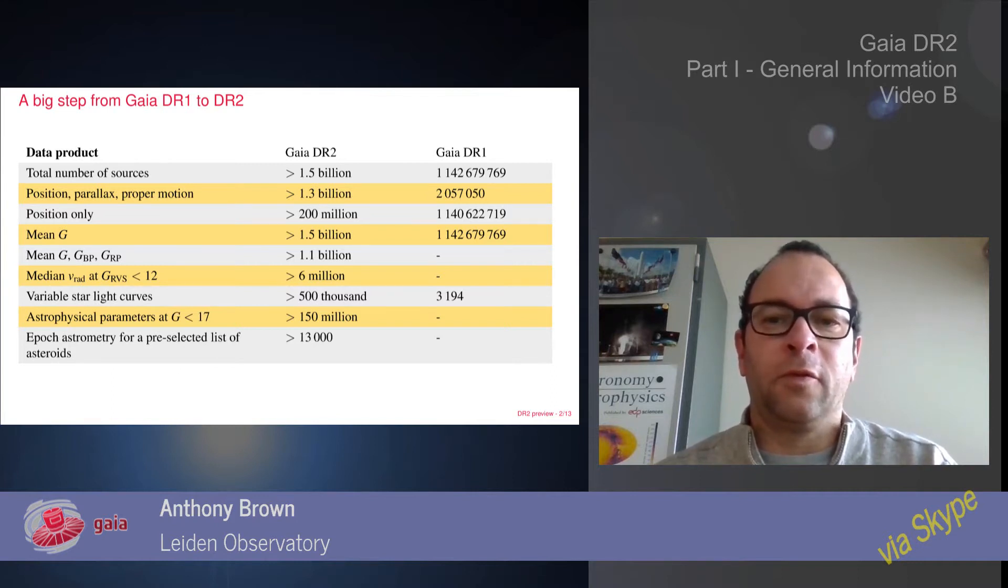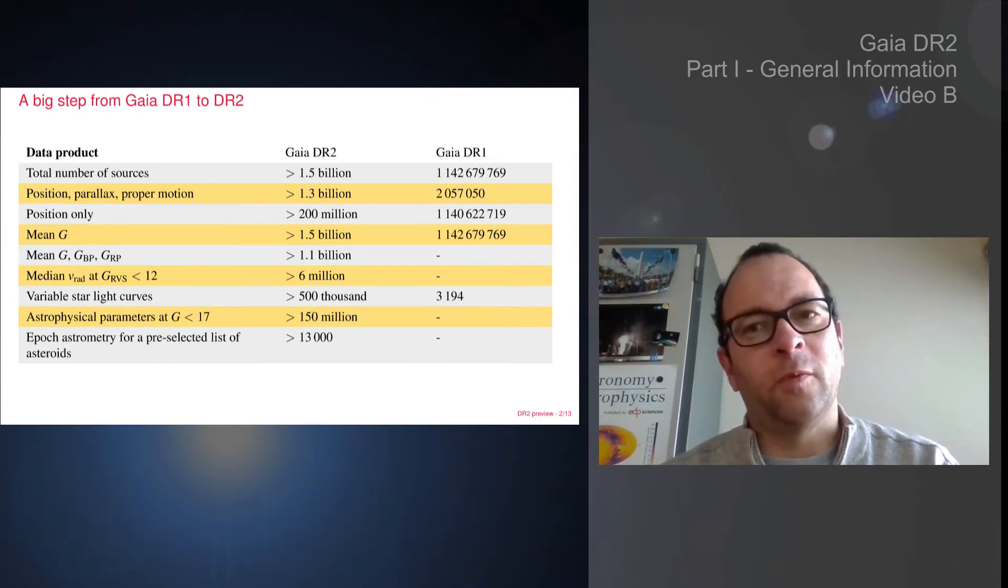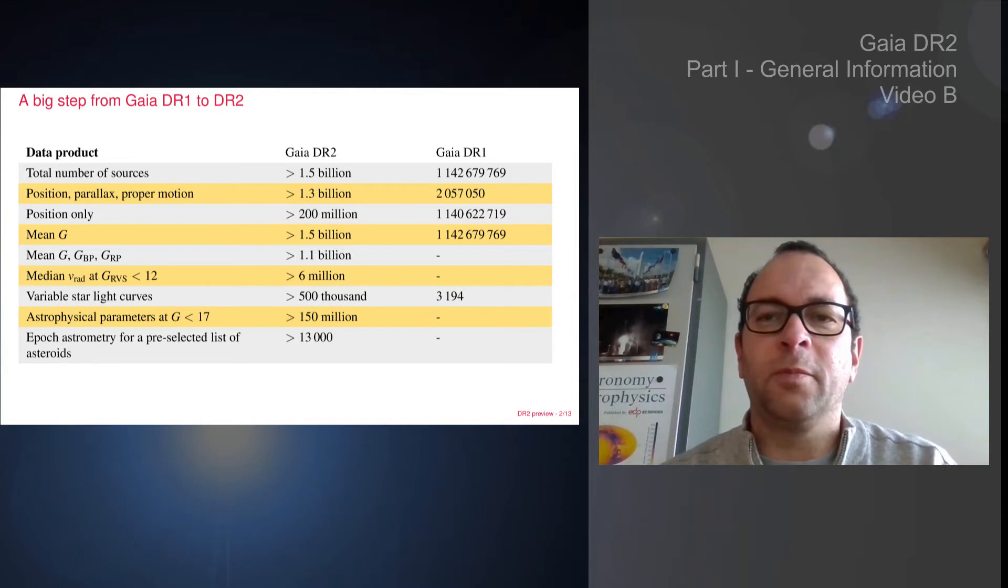In particular, we jumped in data release one from 100,000 parallaxes with Hipparcos to 2 million in TGAS, and now we go to 1.3 billion or even more parallaxes and proper motions. That's a very major step up in terms of the astrometry.